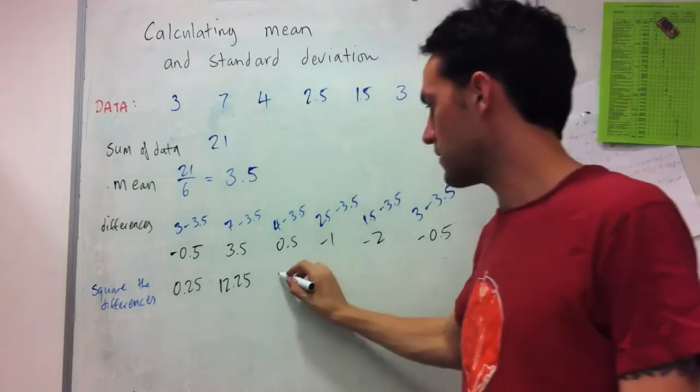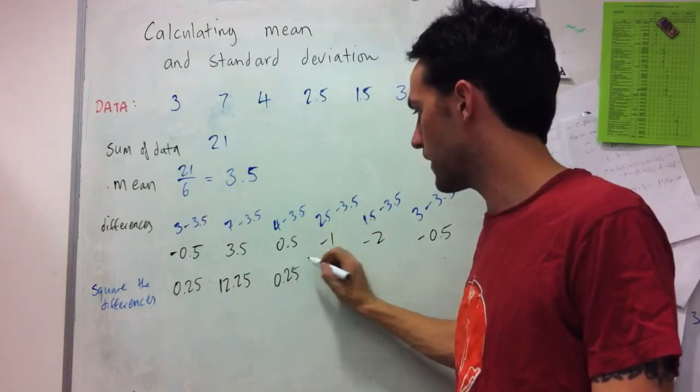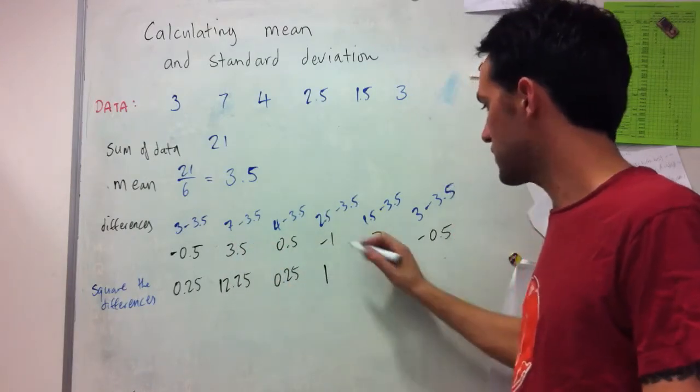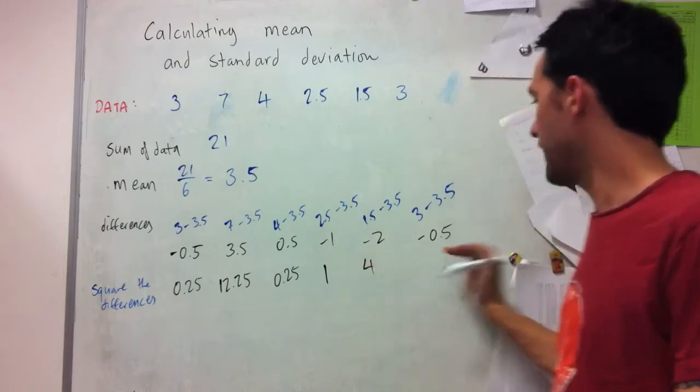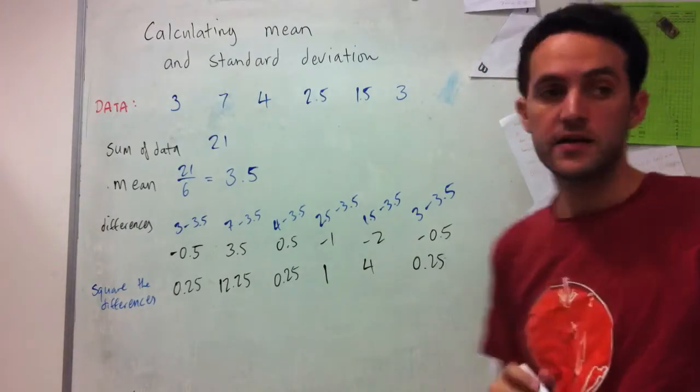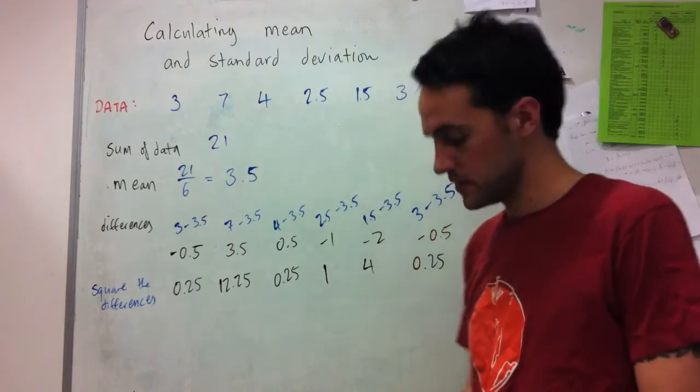0.5 again, which I already know gives me 0.25, half times a half is a quarter. 1 squared, which is just 1. 2 squared, which is 4. And then this 0.5 squared again, which is 0.25. So that's all of the squared differences that I have.